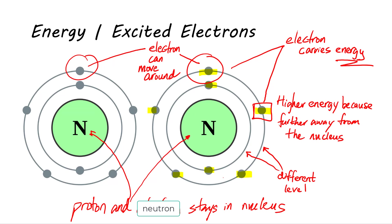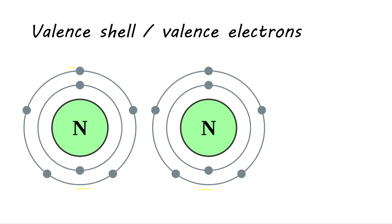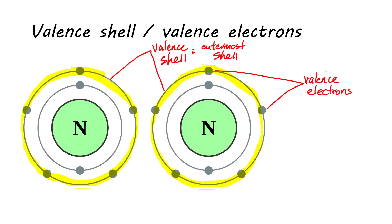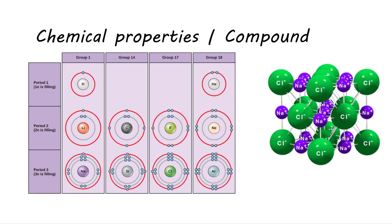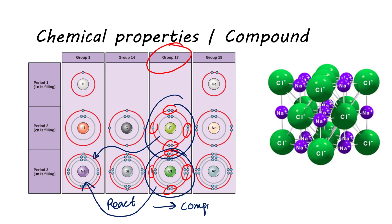The chemical behavior really depends on the number of electrons in its outermost shell, or valence shell, and the electrons located in the valence shell is also known as the valence electrons. Elements with the same number of valence electrons will show similar chemical behavior. For example, all the elements in group 17 have 7 valence electrons, and they all can react with sodium to form a compound.